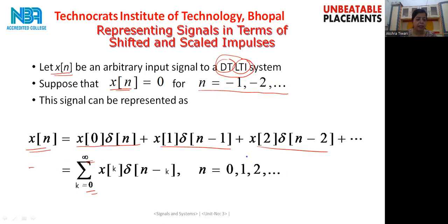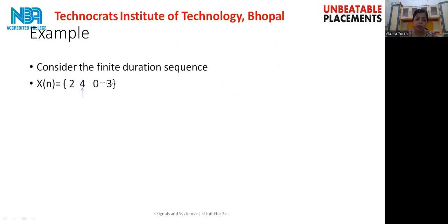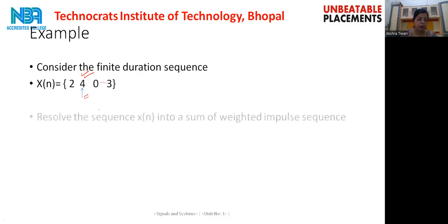This is the general expression used for representing any signal xn. Since we assumed the value of n starts from 0 and is 0 before that, we have considered a causal system. If instead we have a non-causal signal, n would take values from minus 1, minus 2, and so on. Consider a finite duration sequence xn equals {2, 4, 0, 3}, where an arrow is placed to represent that this is our zeroth sample.